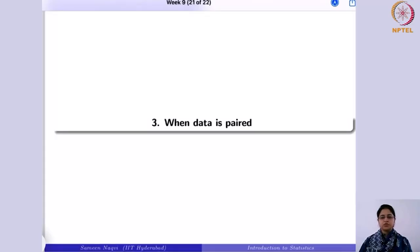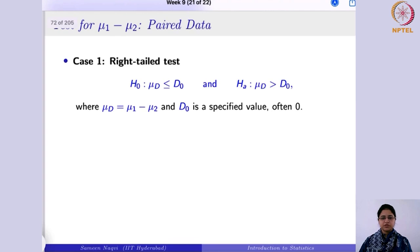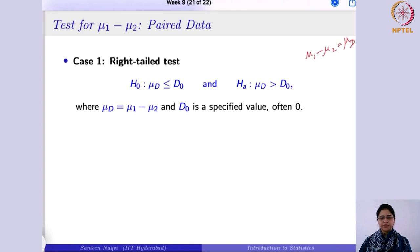Now we are going to work with the situation where the data is paired, or you can say the observations are dependent. In that case, we can denote the difference of the two means μ1 minus μ2 as μd. Then we would say that the difference of the two means is greater than d-naught — that is the specified or hypothesized difference of means.